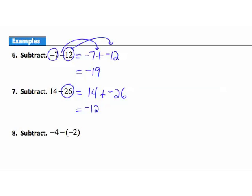Example 8: subtract negative 2 from negative 4. Change to addition: negative 4 stays the same, subtraction becomes addition, and we add the opposite of negative 2, which is positive 2. Now we're adding negative 4 and positive 2. More negatives or more positives? More negatives — two more negatives, so the answer is negative 2.